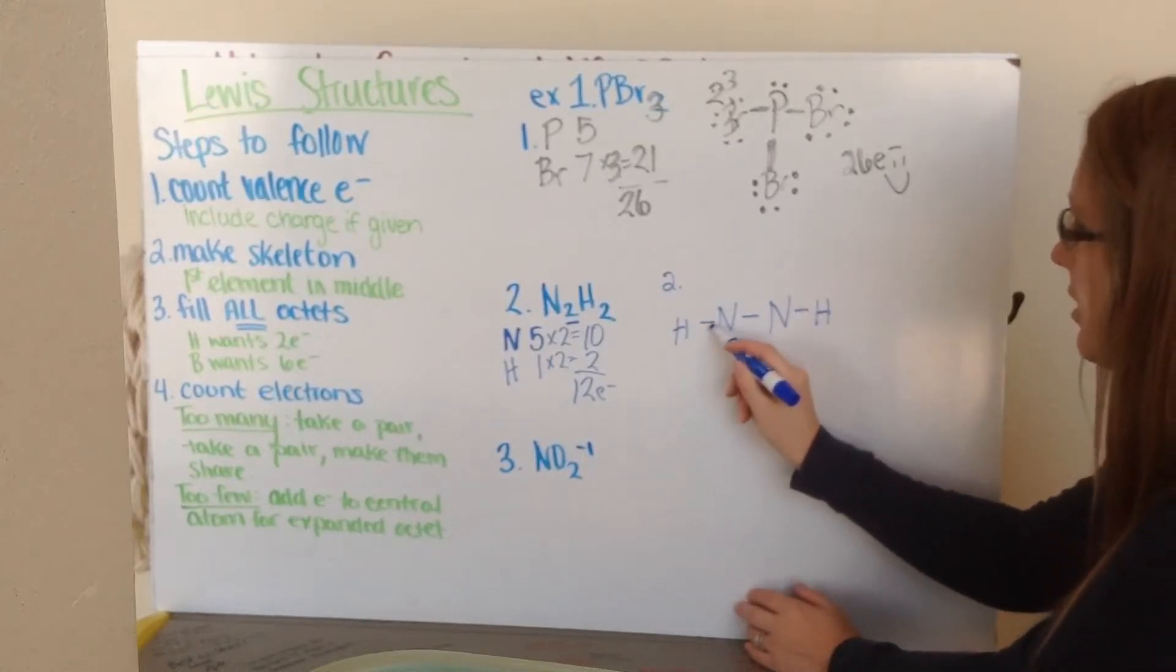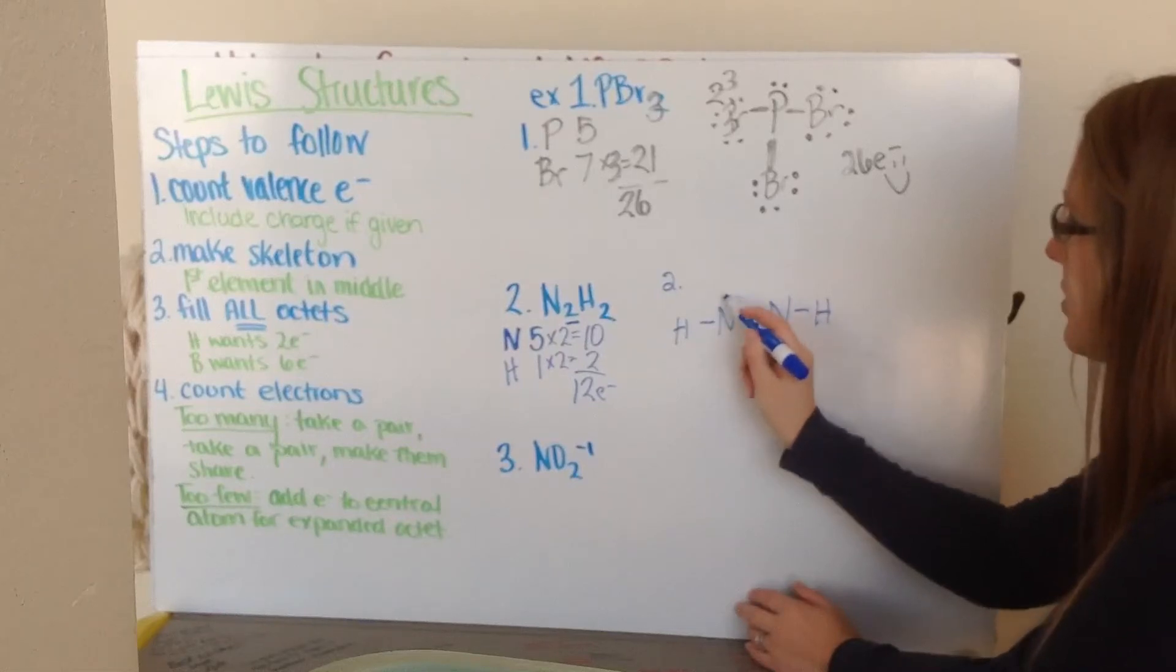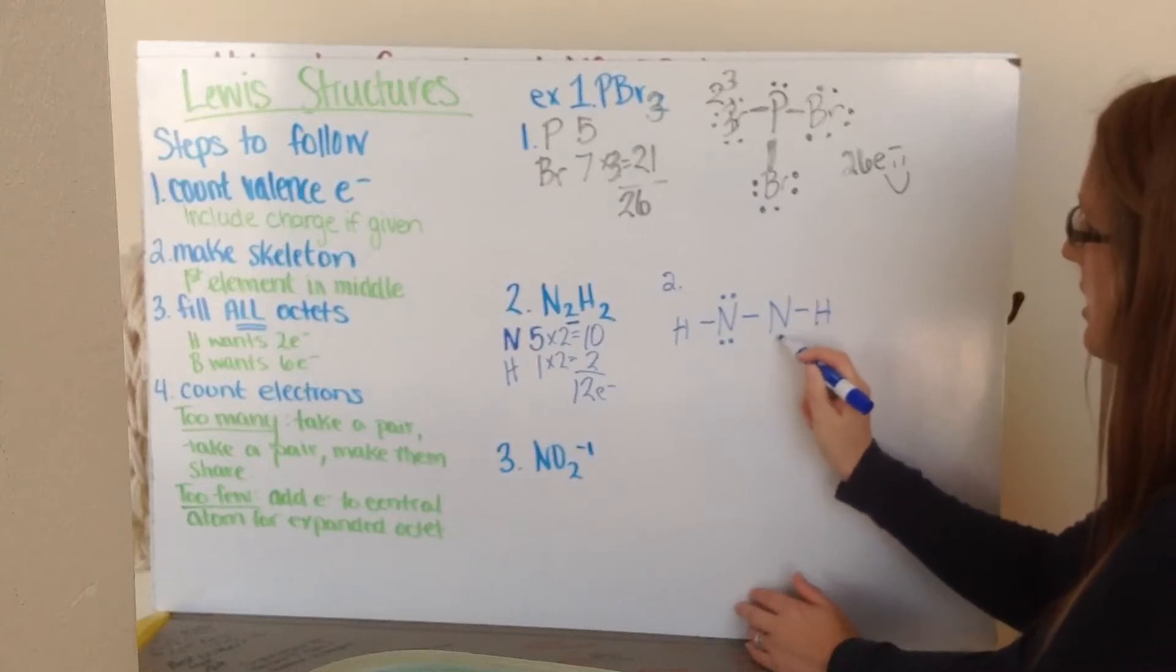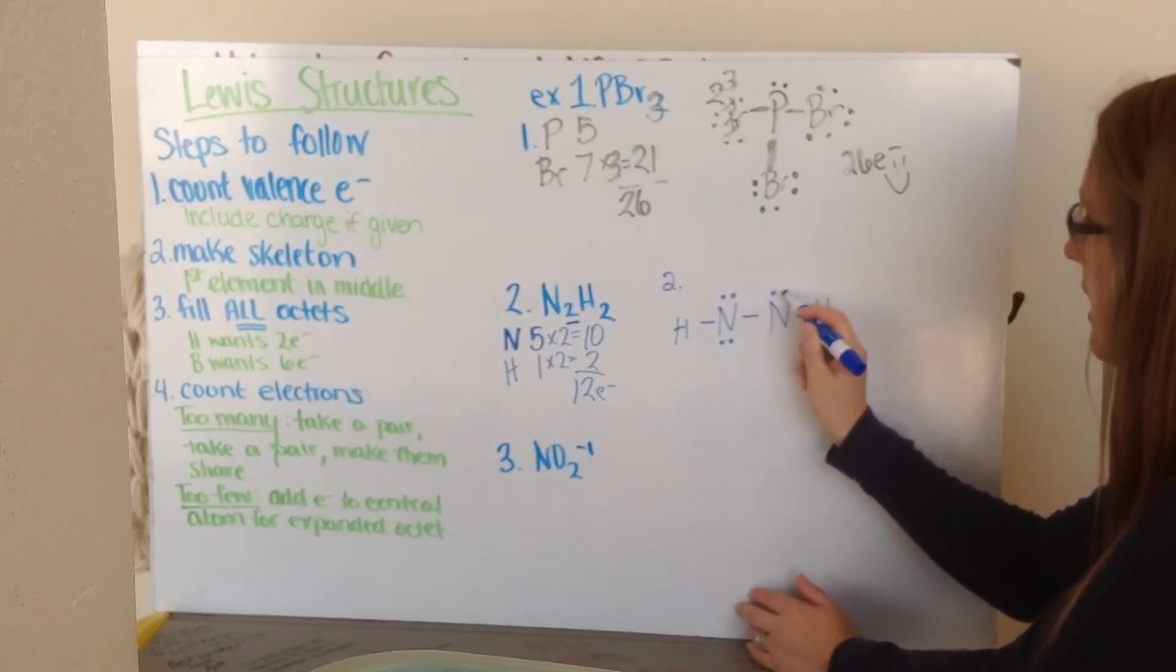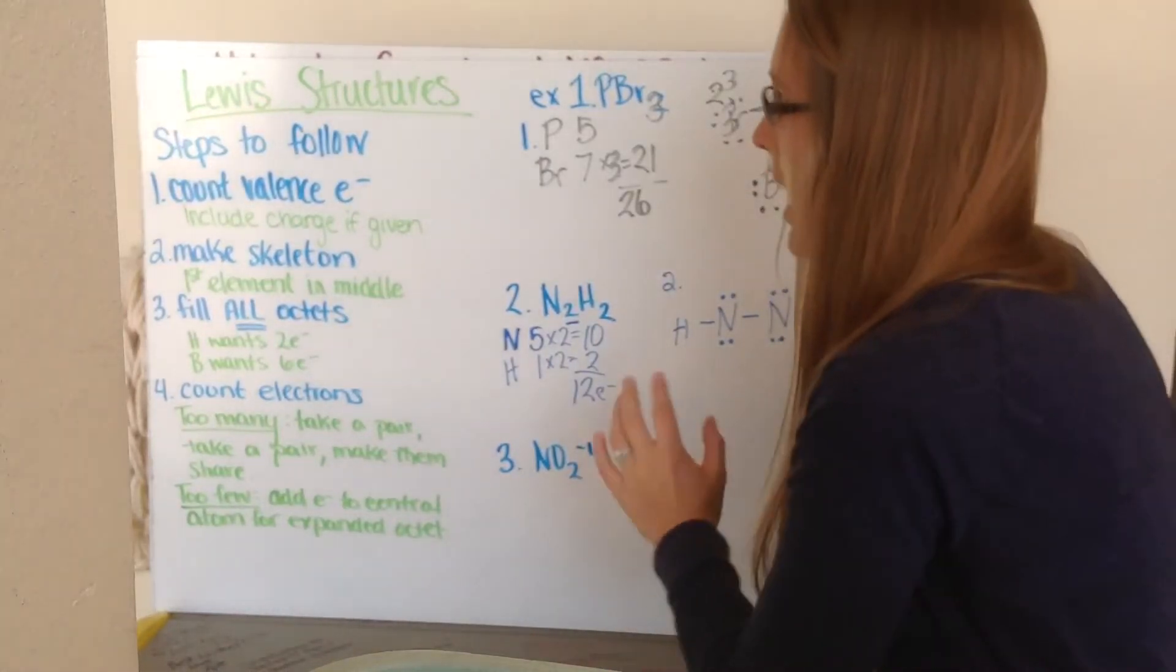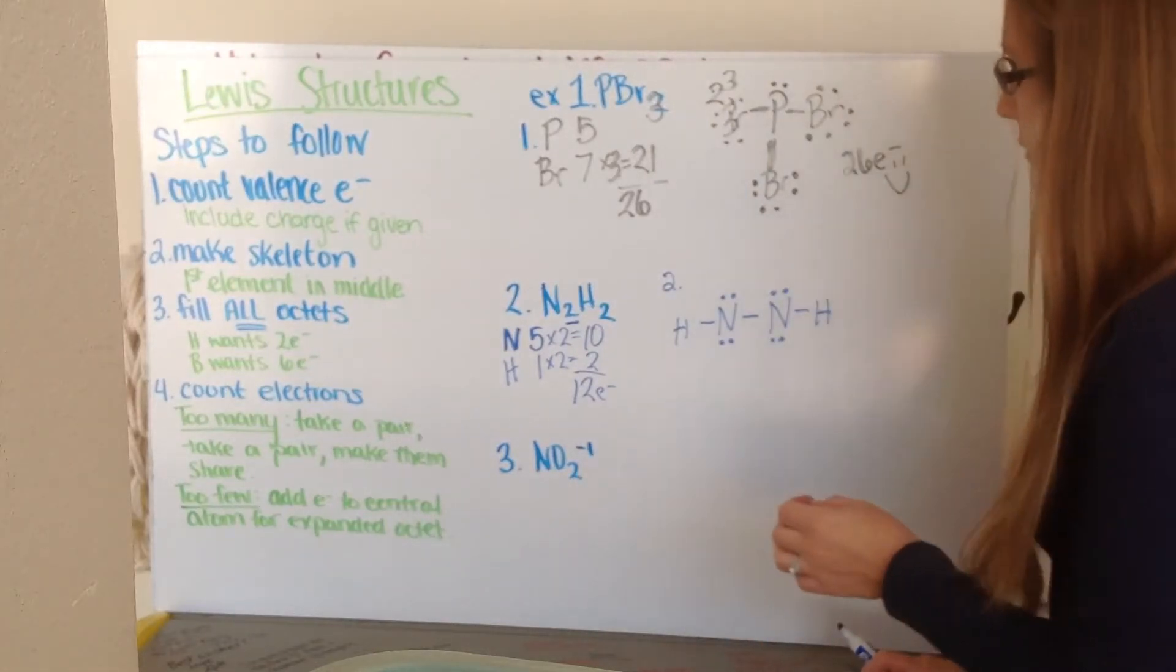Then I go ahead and I fill in all my octets. Now hydrogen wants 2 electrons, and it has 2 from this bond here, and this hydrogen also has 2 here. My nitrogen here has 1, 2, 3, 4, so it needs 2 more. 5, 6, 7, 8. And this nitrogen here has 1, 2, 3, 4, so it needs 4 more. 5, 6, 7, and 8. So now everybody's valence electrons in their octets are filled.